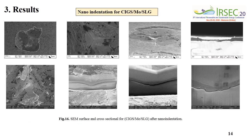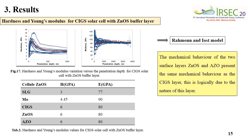Figure 16 shows SEM surface and cross-sectional images for CIGSe and MoSe layers after nanoindentation. The CIGSe coating has a weak mechanical behavior. Table 2 shows hardness and Young's modulus values for the CIGSe solar cell with ZnO:S buffer layer. The mechanical behavior of the two surface layers, ZnO:S and AZO, present the same mechanical behavior as the CIGSe layer.